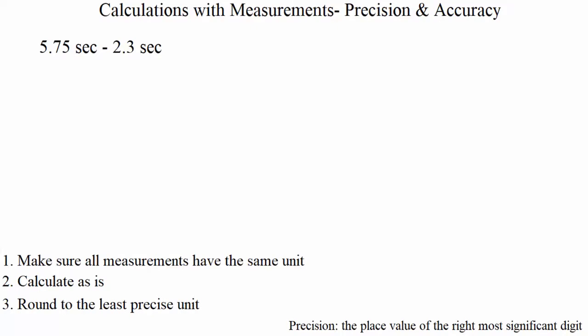This video covers calculations with measurements, considering precision and accuracy. Remember: accuracy is how many significant digits you have in a measurement, and precision is what place value the measurement is precise to. At the bottom of the screen are the steps for how to do calculations with measurements.